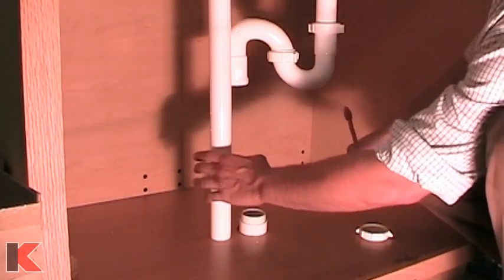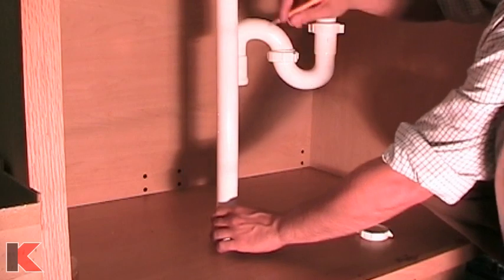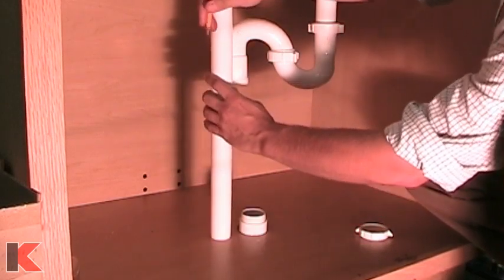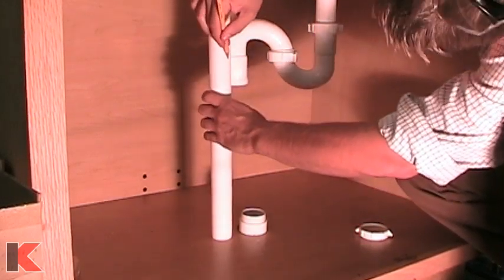Align the J-bends with the roughed-in outlet in the floor. Measure and mark the length needed to make the connection on the drain tube.